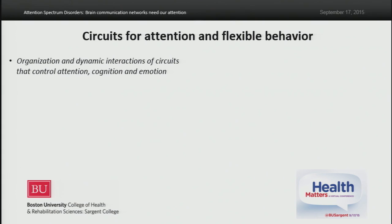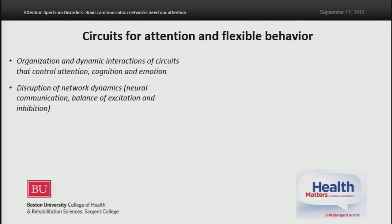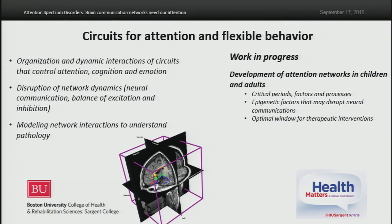To summarize, we study the organization and dynamic interactions of circuits that control attention, cognition, and emotion. We study the disruption of neural communication and the balance of excitation and inhibition, and then we put all this data together to model network interactions in order to better understand pathology. This work continues, and we're currently examining critical periods, factors, and processes that can affect the development of attentional networks in children and adults. We're particularly interested in epigenetic factors that may disrupt neural communications.